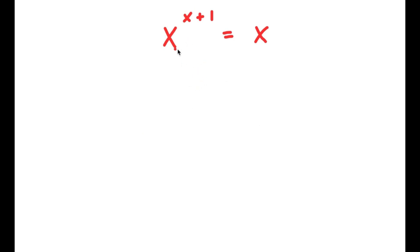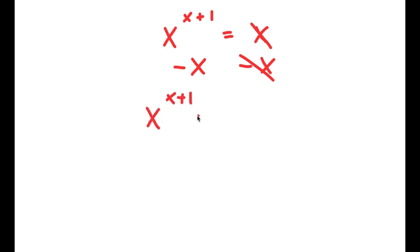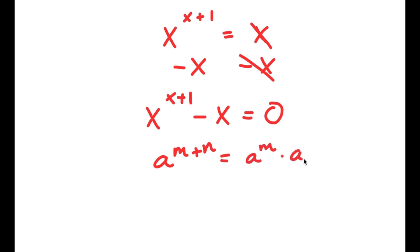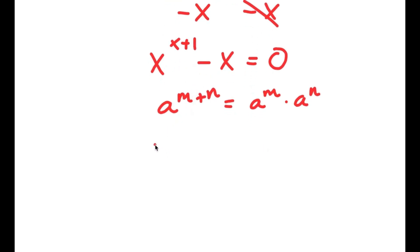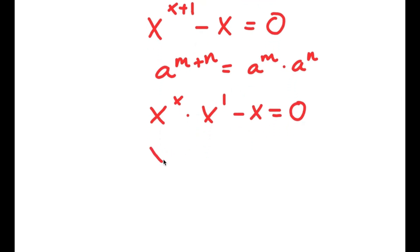In this problem, I have x to the power of x plus 1 is equal to x. To solve this, I start by subtracting x from both sides, leaving x to the power of x plus 1 minus x equals 0. Using the exponent rule, x to the power of x plus 1 equals x to the power of x times x to the power of 1. Now I have x to the power of x times x minus x equals 0. Factoring out x, I get x times x to the power of x minus 1 equals 0.